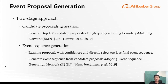Event proposal generation follows a two-stage approach. We start with candidate proposal generation, where 100 top candidate proposals are generated using the boundary matching network (BMN). Then we need to select a subset of proposals. We compare two methods: one is to rank proposals by predicted BMN confidences and select the top K as the final event sequence; the other is to adopt the event sequence generation network (ESGN) to sequentially select the subset of proposals.